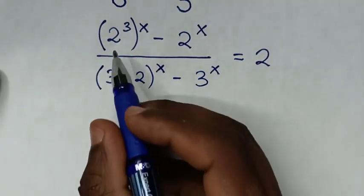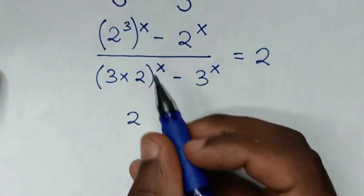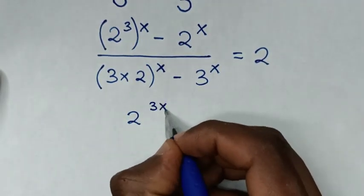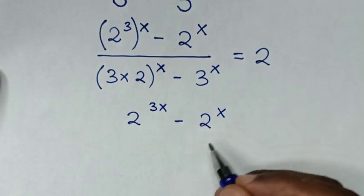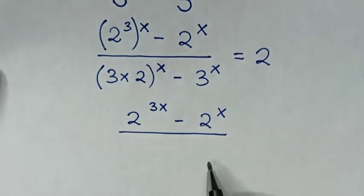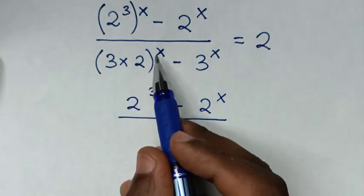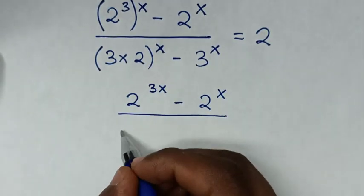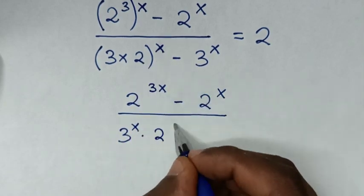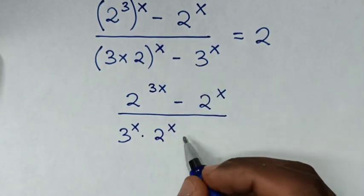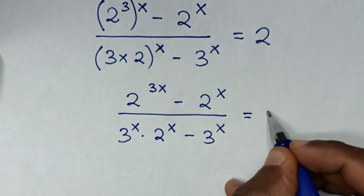In the next step, the numerator becomes 2^(3x) minus 2^x. In the denominator, we multiply the power of x inside the bracket, so it becomes 3^x times 2^x, minus 3^x, equals 2.